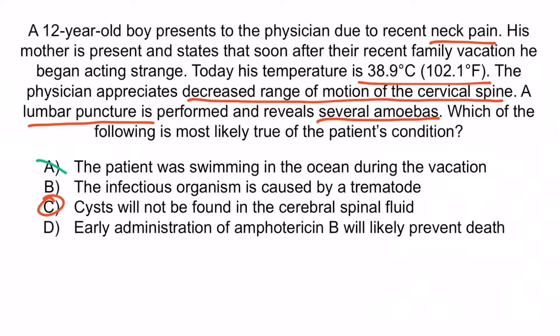Choice A is wrong because Naegleria fowleri exists in freshwater such as Niagara Falls, streams, and lakes — it does not live in saltwater like the ocean. Choice B is incorrect because Naegleria is not a trematode; it's a protozoa — recall the protein shack the hooligans visit during their skinny dipping adventures. Choice D is wrong because amphotericin B is not likely to prevent death. It should still be administered just in case, but Naegleria is typically lethal upon reaching the CNS.